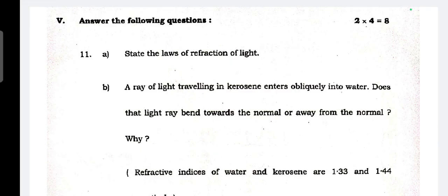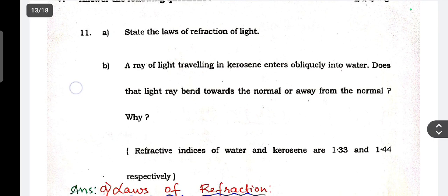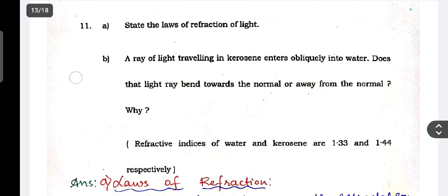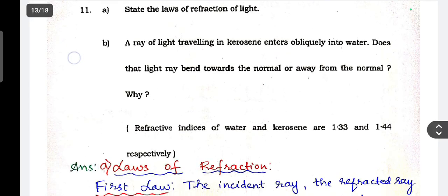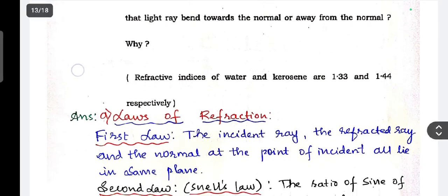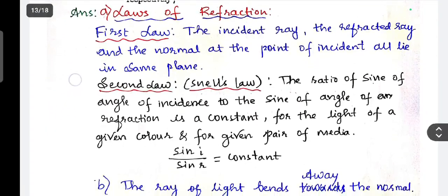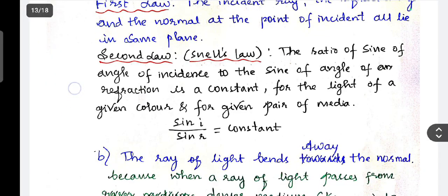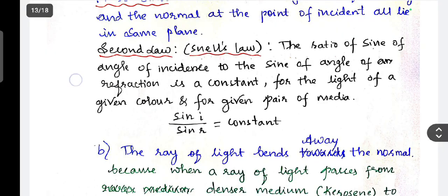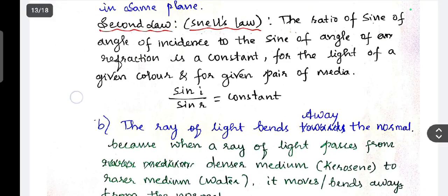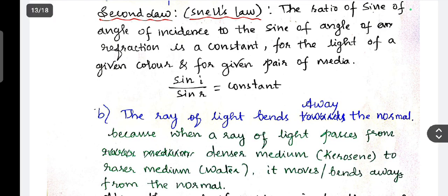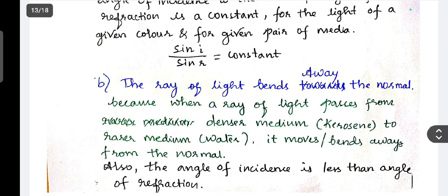Next, four mark questions - two questions will be there, each carries four marks. State the law of refraction of light. A ray of light traveling in kerosene enters obliquely into water. Does the ray of light bend towards the normal or away from the normal? Refractive indices of water and kerosene are 1.33 and 1.44. So law of refraction is this. Second law, that is Snell's law. For second answer, the ray of light bends away from the normal because when a ray of light travels from denser medium to rarer medium, it bends away from the normal. Also, angle of incidence is less than the angle of refraction.